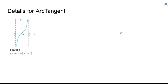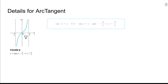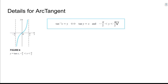Arc tangent: looking at the graph of tangent, there are many repeating branches, so to make it one-to-one we limit the domain to between negative pi over 2 and pi over 2. We define inverse tangent of x equals y, therefore tangent of y equals x, and y is the angle — it must be between negative pi over 2 and pi over 2.